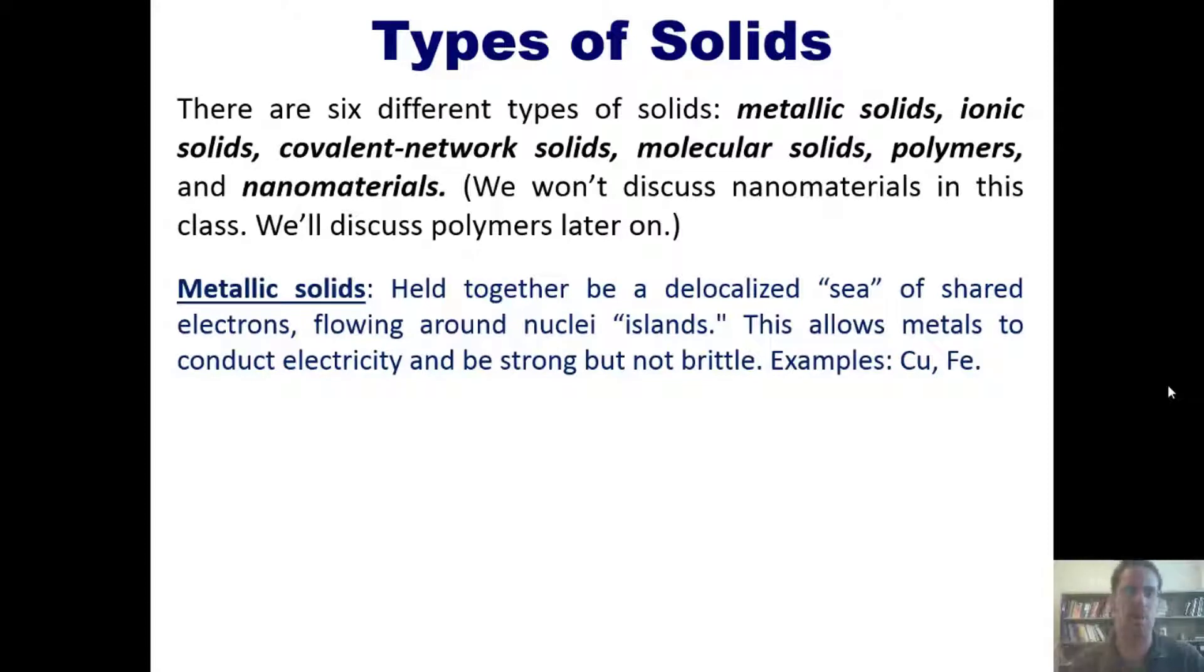First are metallic solids. Metallic solids are really just solid metals. If you were to look very closely at solid metals, what you would see is that they look like delocalized seas of electrons floating around little islands that are their individual nuclei. This reality allows metals to conduct electricity but also to be strong while not brittle. Examples include copper and iron, as well as most of the other elements on the periodic table.